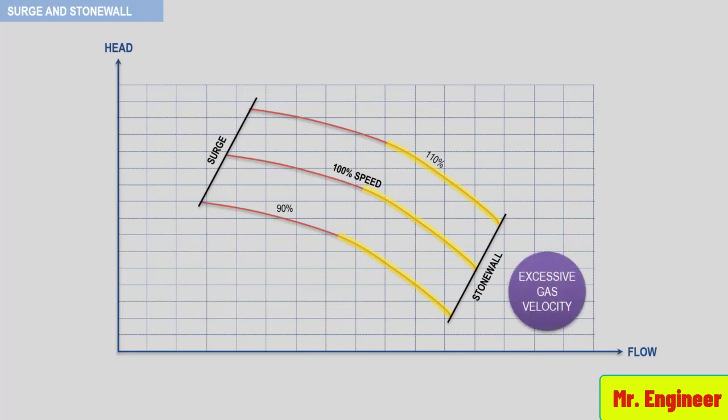As the head required by the process system is reduced, the volume flow through the impeller will increase, as depicted in this example.